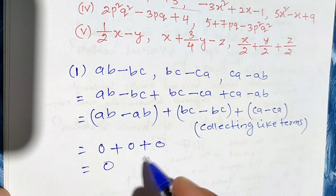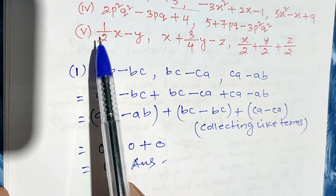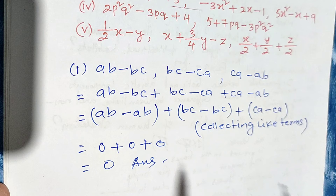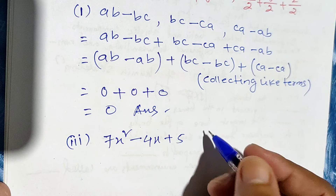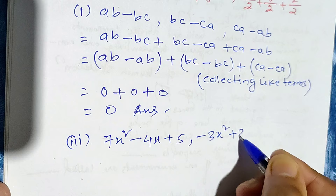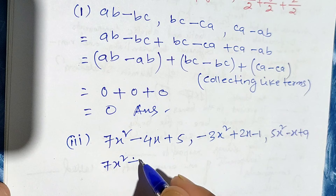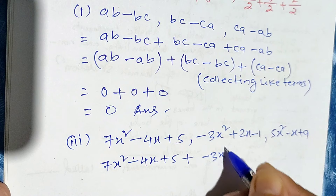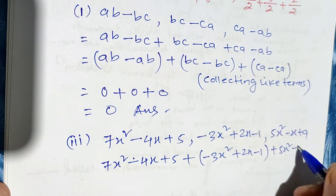Let us now do question number 3 — a slightly harder one — and then question number 5. The rest I will show you with clips. Question number 3: 7x² minus 4x plus 5, comma, minus 3x² plus 2x minus 1, comma, 5x² minus x plus 9. We need to add these together.